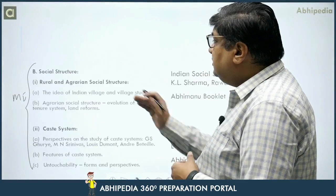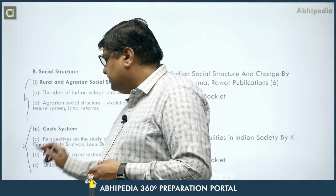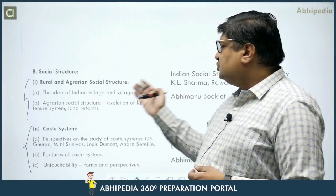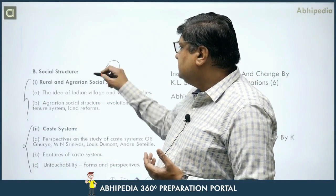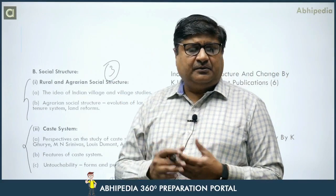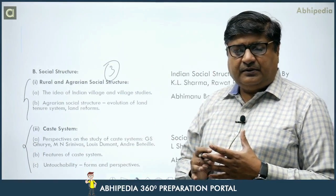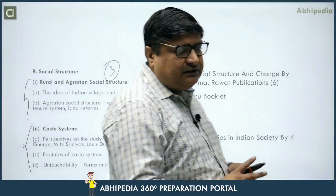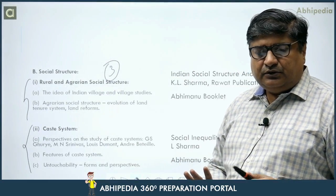The third chapter, from Section B, is 'Rural and Agrarian Social Structure' — a very important chapter. We cover villages, agrarian social structure, land tenure systems, and land reforms; about three questions come from it. Then, caste system is an evergreen chapter — we have to do it. Around 20 to 30 marks of the paper will come from caste system; two or three questions will come from it and you must write it carefully.